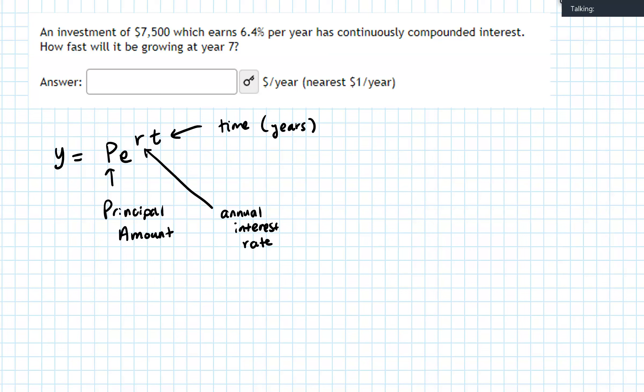So let's go ahead and plug in the values that we have here. We have y equals, our starting amount is $7,500. We have e, which is our constant, which is approximately 2.71, and our interest rate is 6.4%. I'm going to rewrite that as a decimal, and then we are multiplying that by t in years.